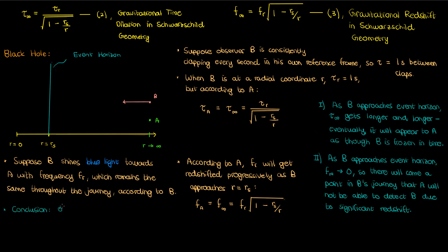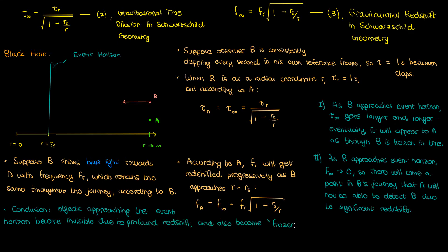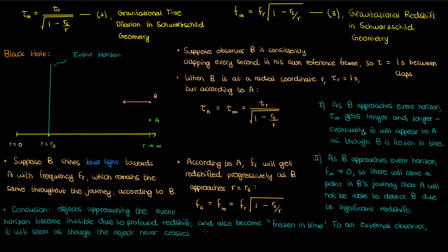So we can see from conclusions one and two that as observer B approaches the event horizon, there will come a point in his journey that observer B will become frozen in time and will also become so redshifted that he'll virtually be invisible to A. That's why we can't see anything in or even near a black hole — as an object gets closer to the event horizon, the object gets redshifted so much that it virtually becomes undetectable. And even if we could somehow reverse the redshift, we'll never actually see the object cross the event horizon because by the time it gets close it's just going to appear frozen in time because of gravitational time dilation, at least according to our external reference frame.